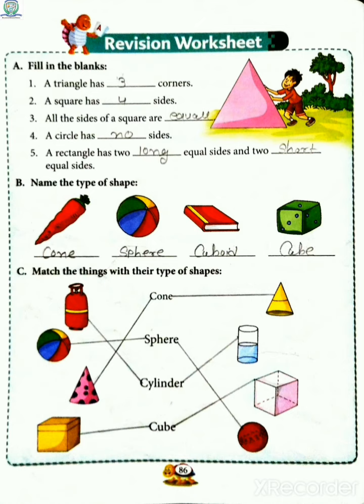So yahaan pe jitne shapes aap ko diya hai, in sabhi ki name samajh jaate hai. Sabse pehle hai carrot, toh uska shape hai cone. Next hai ball, ball ka shape hai sphere. Next hai book, book ka shape hooga cuboid.